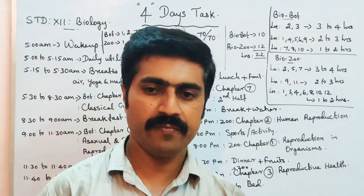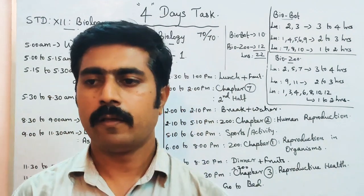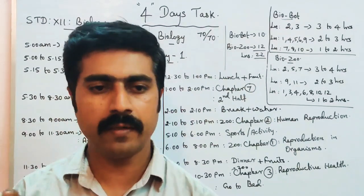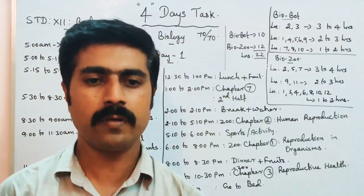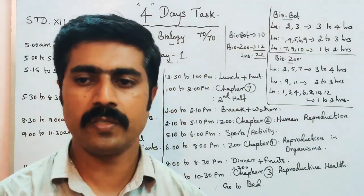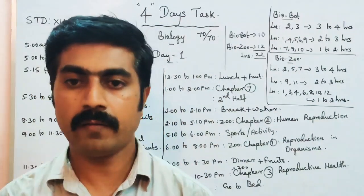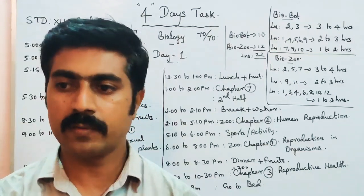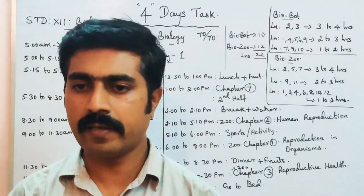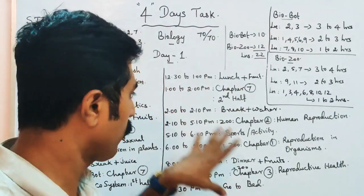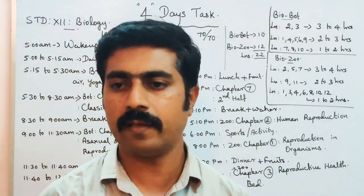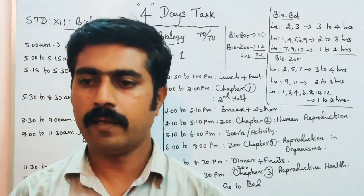After 8pm, have dinner — add fruits to your meal. Then from around 8 to 10pm, cover Zoology Chapter 3: Reproductive Health. At 10:30pm, have hot milk or coffee. That completes Day 1, covering 6 chapters. The Day 2 schedule will follow. The 4-day and 3-day exam schedules will also be covered.